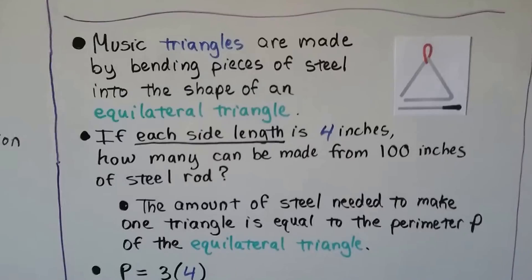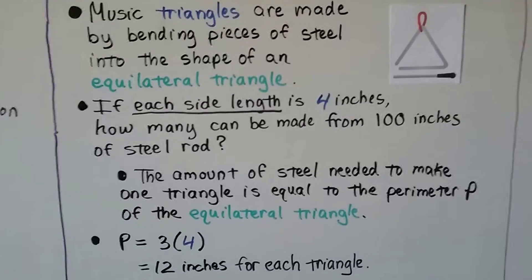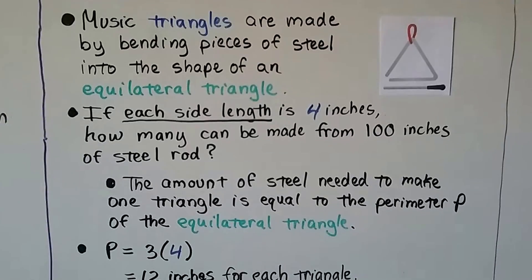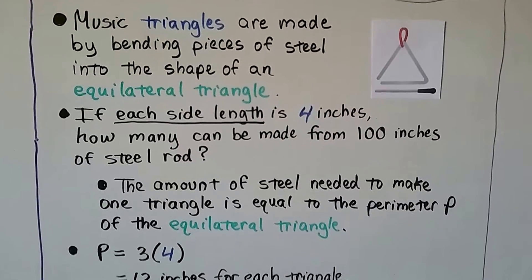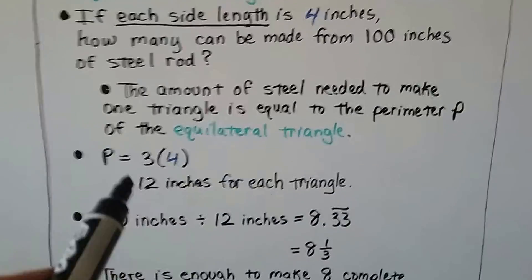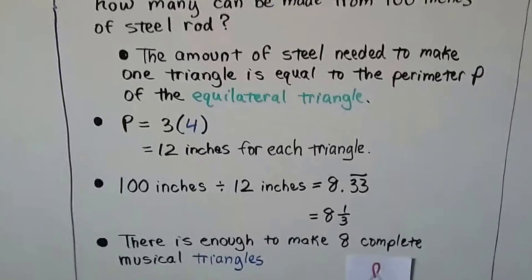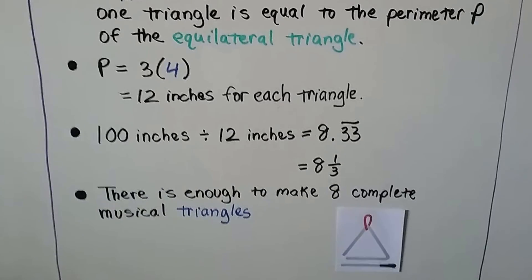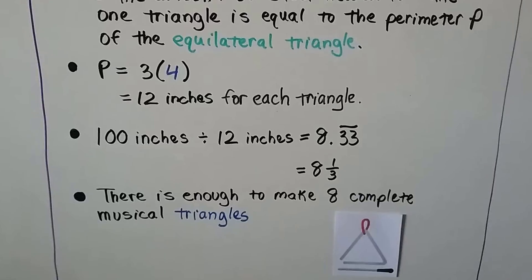Music triangles are made by bending pieces of steel into the shape of an equilateral triangle. If each side length is 4 inches, how many can be made from 100 inches of steel rod? The steel needed for one triangle equals its perimeter: 3 times 4 equals 12 inches per triangle. Dividing 100 by 12 gives 8.33, but we need complete triangles, so there's enough to make eight complete musical triangles.